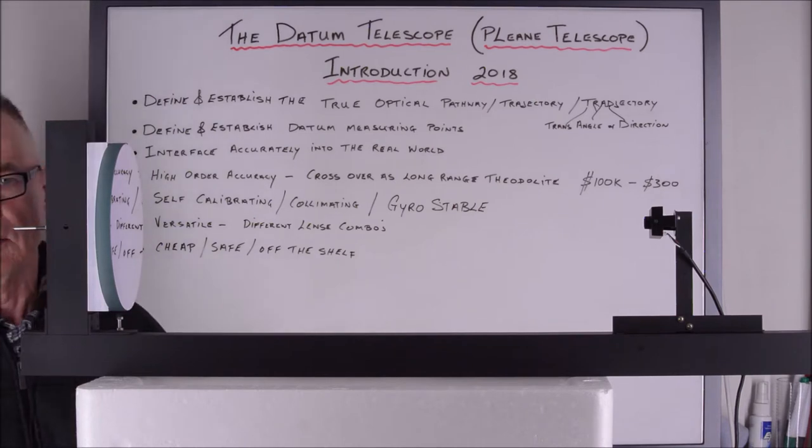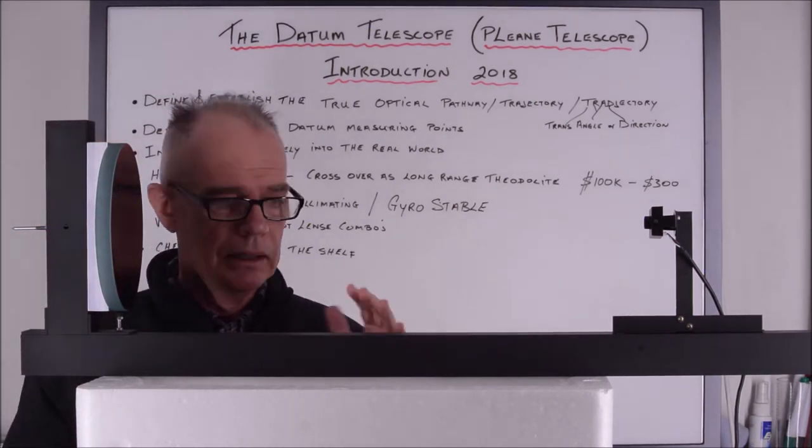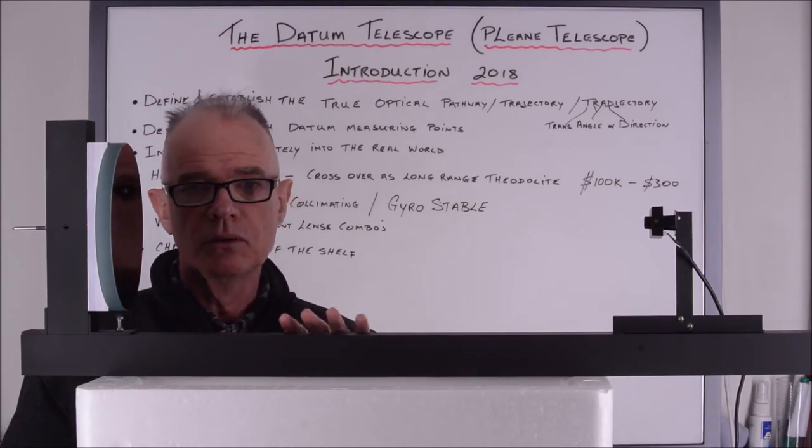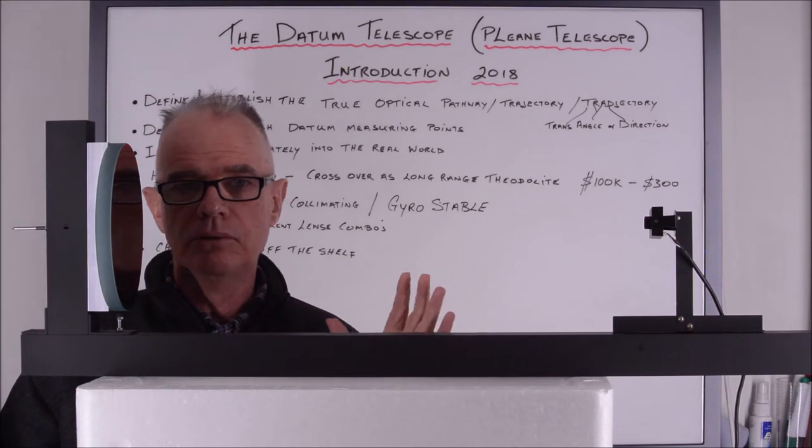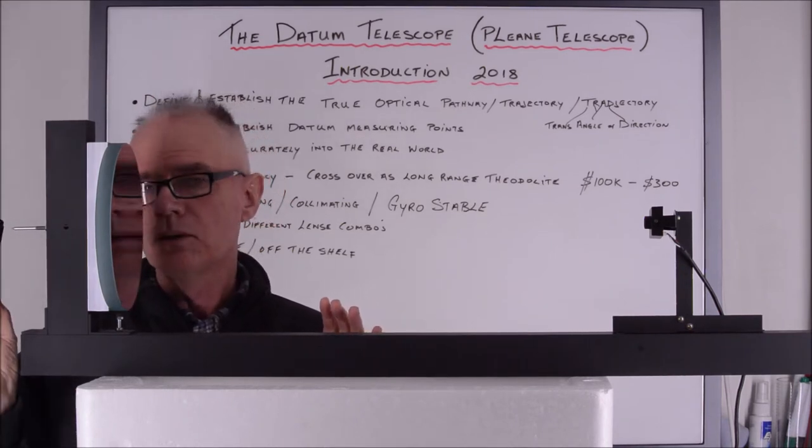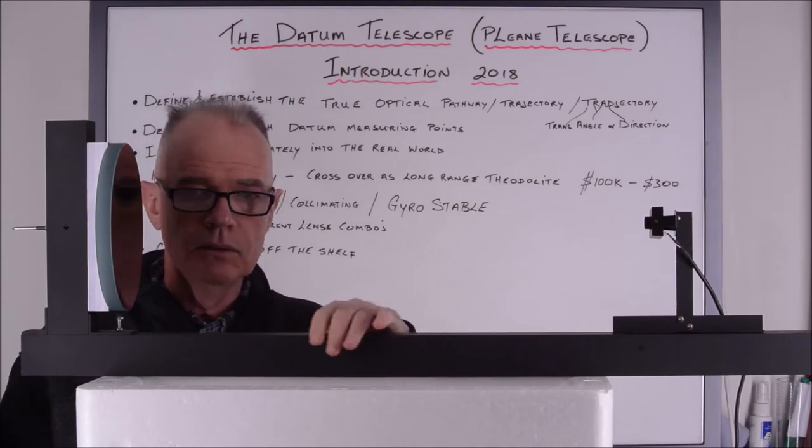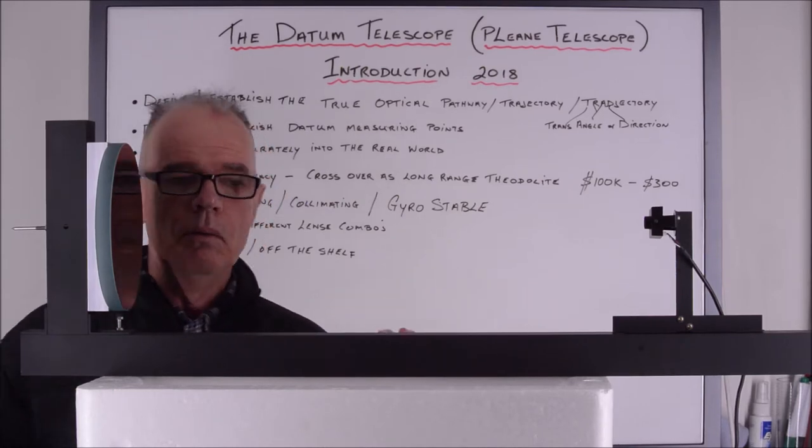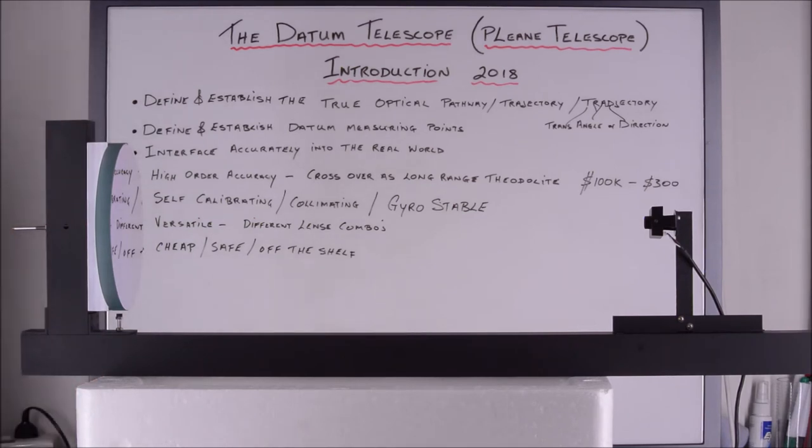Existing telescopes are all round, and they are very hard to get some sort of point, some flat surface to measure any defined point. This telescope has various datum points all around it, and it has flat surfaces. It allows me to mount MEMS electronic measuring accelerometers and angling devices.